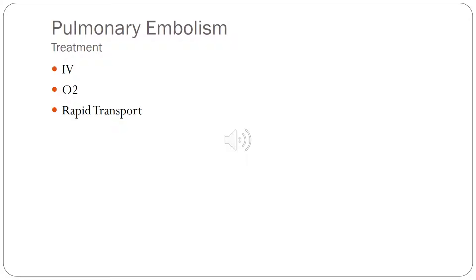Treatment for PE looks minimal because the ultimate goal is thrombolytics — patients with a saddle PE have a very high mortality rate. This is where we support the patient and rapidly transport as fast as we can, because there's not a lot of treatments we can do in the field.